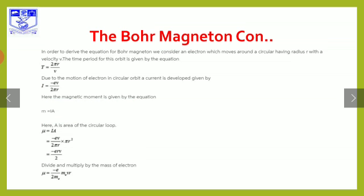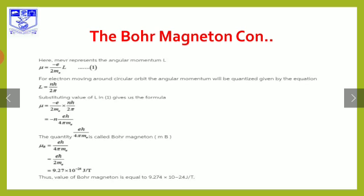Dividing and multiplying by the mass of the electron, μ = e divided by 2mₑ, times mₑ v r. We can recognize that mₑvr is the angular momentum L. Therefore, μ = minus e divided by 2mₑ, times L. The angular momentum is quantized and given by L = nℏ / 2π, where n is the principal quantum number.